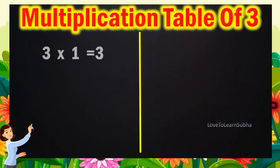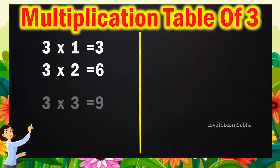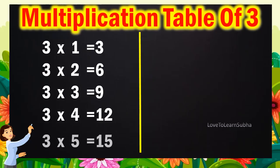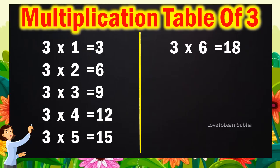3 1s are 3, 3 2s are 6, 3 3s are 9, 3 4s are 12, 3 5s are 15, 3 6s are 18,